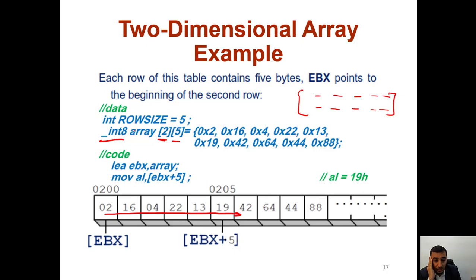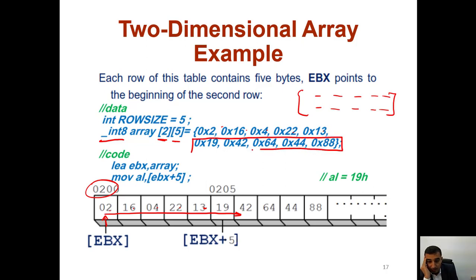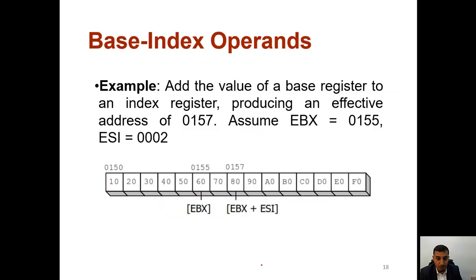We defined an array of __int8 size 2 by 5 with some values. When stored, the first location at address 200 will have values 1 2 3 4 5, then the next part starting at 205 — the size of the row — will hold the second row. This is how you access the second row. The row size determines where each row starts.